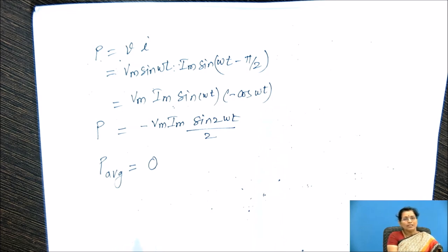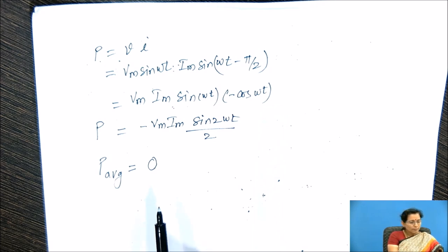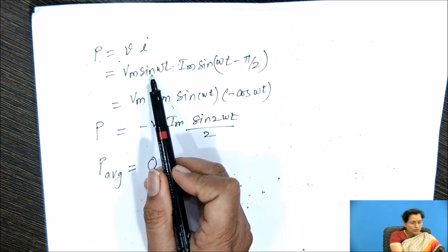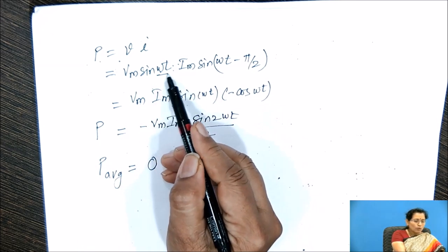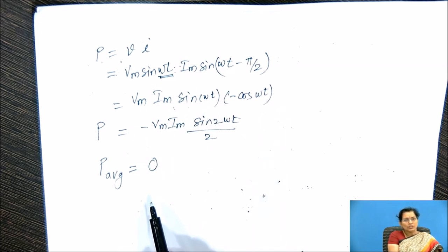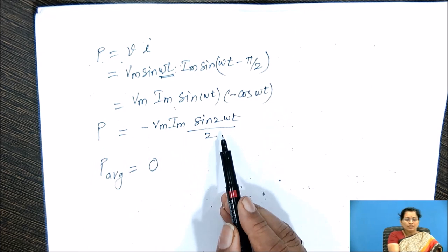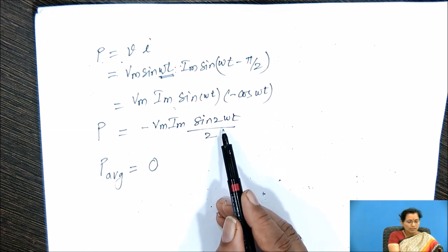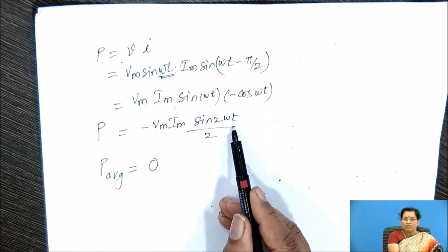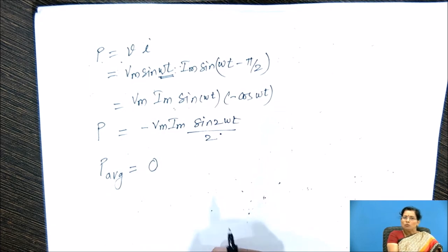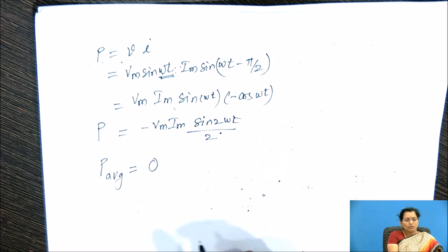In a purely inductive circuit, power consumption is 0. We can compare this power equation with the voltage equation. In the voltage equation the angle is ωt, but here in this power cycle the frequency is double — 2ωt. Means double frequency is there compared to the voltage cycle. We can indicate that graphically also.